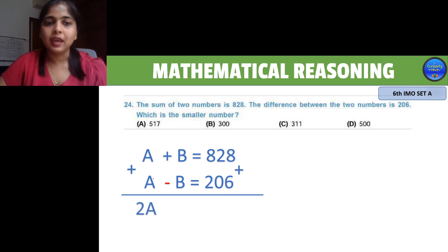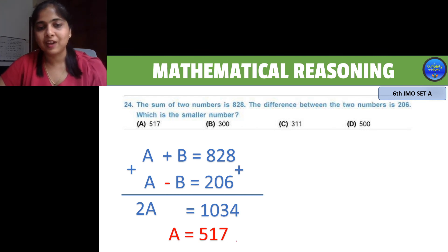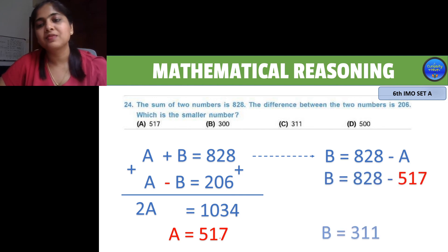So A plus A is 2A, but plus B minus B is 0, so there is no B. This equals 828 plus 206, which is 1034. Now 2A is 1034, so A is 1034 divided by 2, which is 517. Let's replace this in our first equation. So B is 828 minus A, which equals 828 minus 517, which is 311. The smaller number of the two is 311.